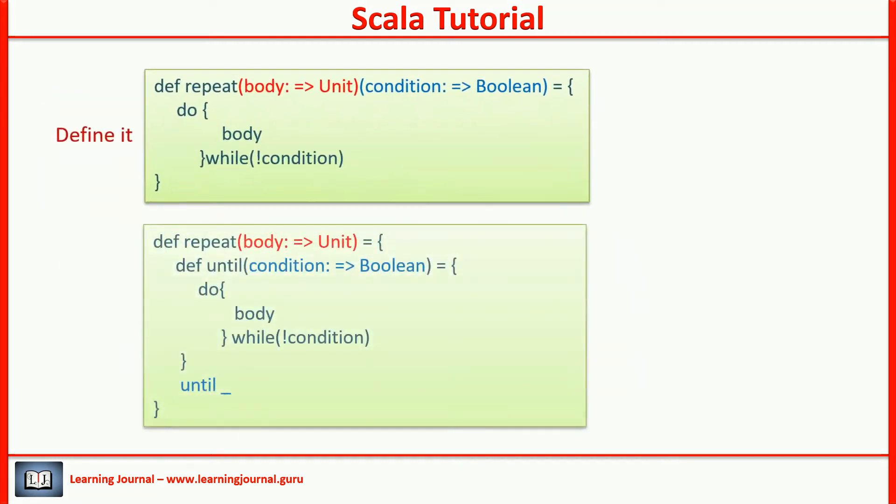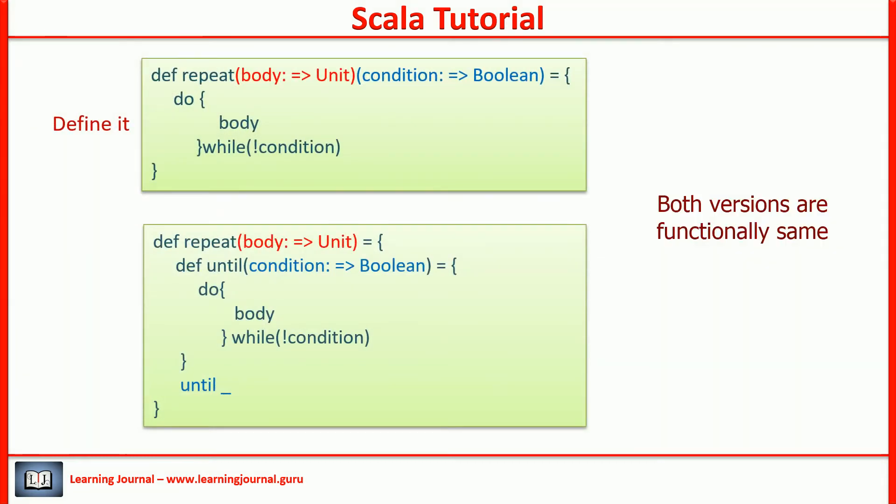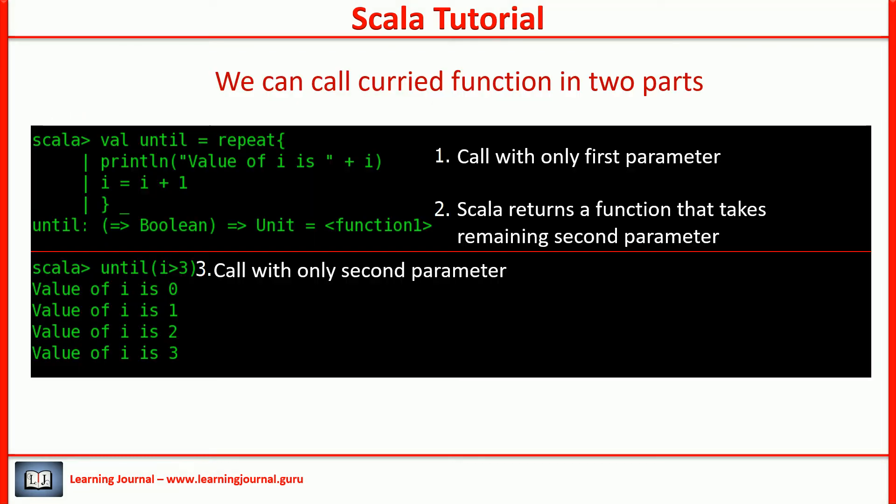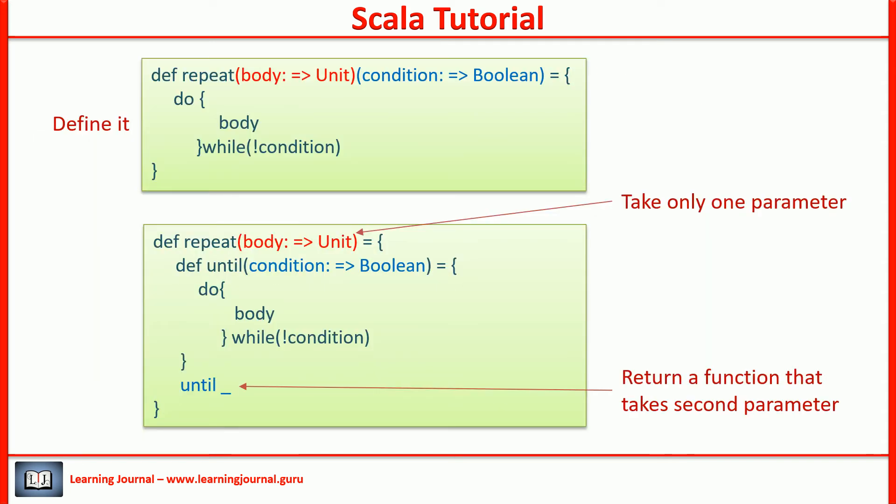Here is the next version. This code is almost same as the curried function. We already learned in the earlier videos that when we pass the parameter of the first group of a curried function, Scala applies them to the code and returns a brand new function with remaining parameters. The curried syntax does it automatically. I changed the code to do it manually. That's the only difference here in the second version. Otherwise, both the versions are essentially same.